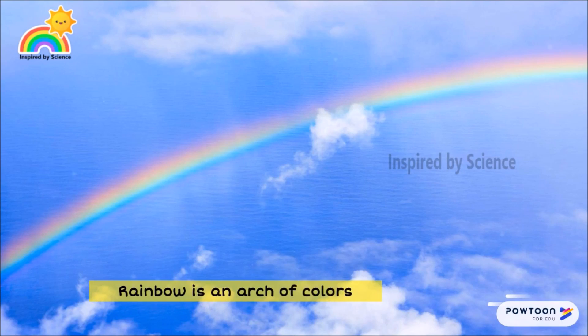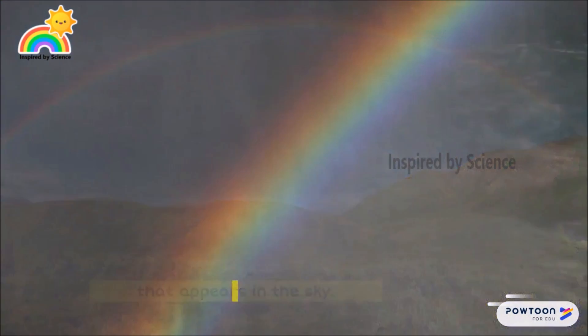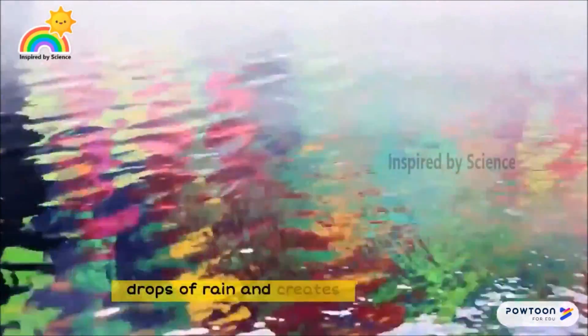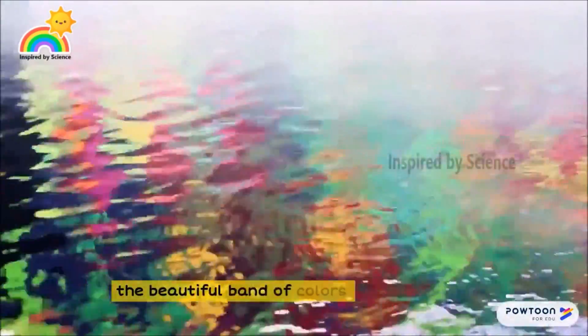Rainbow is an arch of colors that appears in the sky. It occurs when it rains in one part of the sky while the sun is shining in another. Sunlight passes through drops of rain and creates a beautiful band of colors.